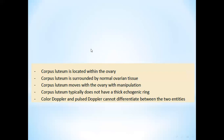Here, we may find an intrauterine sac, and when we look at the adnexal region, we find a rounded structure which is a corpus luteum — and it may be mistakenly regarded as a heterotopic pregnancy, but it is not. So how do we differentiate between a corpus luteum and an ectopic or heterotopic pregnancy?